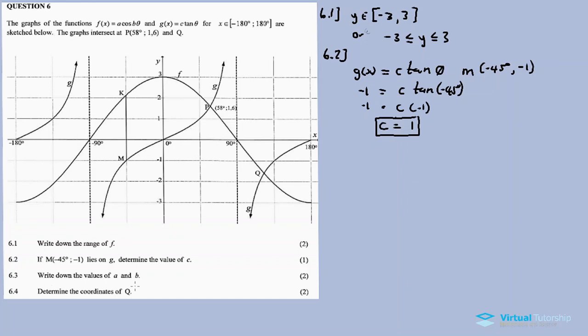And then 6.3, write down the values of A and B. The A value is equal to 3. Since the amplitude for F is 3, or the highest point is 3, that means A is equal to 3.